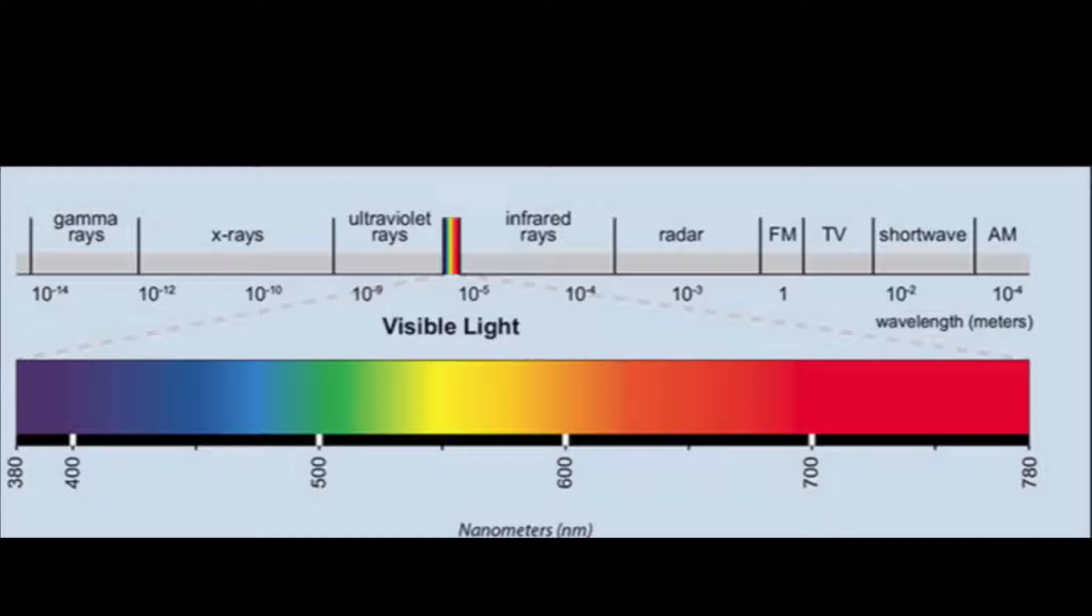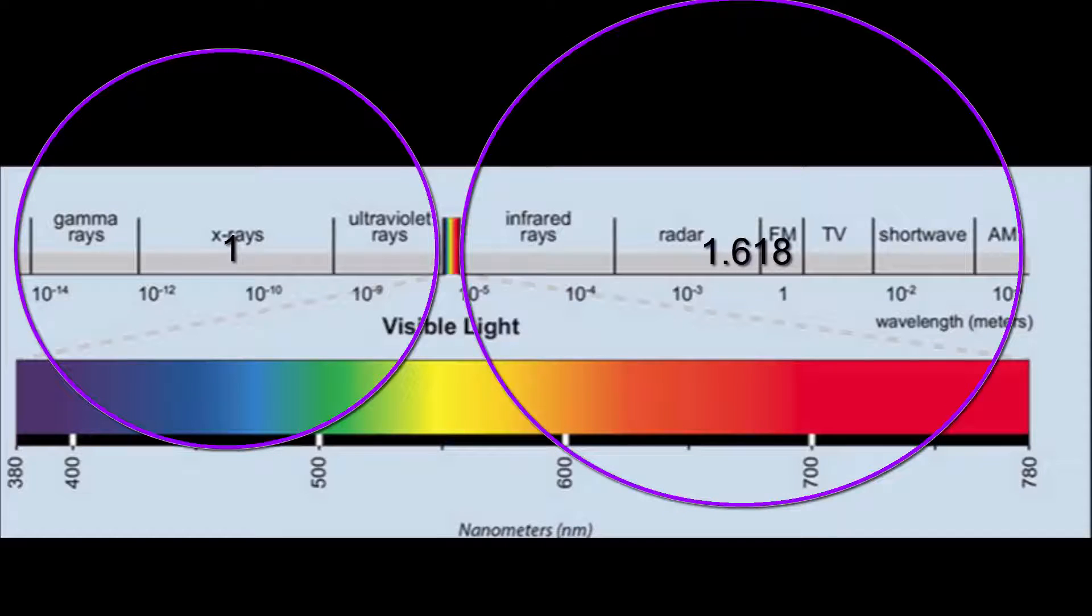The difference between the right hand side of visible light and the left hand side of visible light is phi to pi. Pi is on the gamma ray side and phi is on the infrared side.